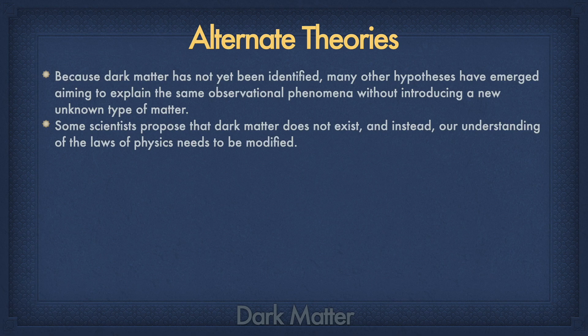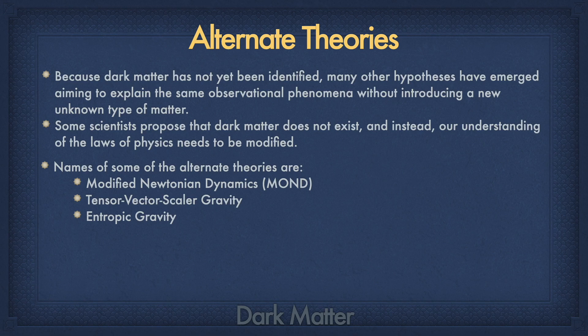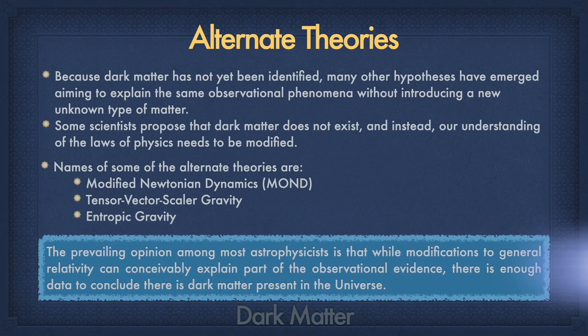Because dark matter has not been detected in lab conditions, many alternate theories have been proposed. All these theories explain the same cosmological phenomena without depending on dark matter. The alternate theory proponents argue that we should modify our understanding of the laws of gravity. Some leading alternate theories are Modified Newtonian Dynamics (MOND), Tensor-Vector-Scalar gravity, and Entropic gravity. In spite of these proposals, most astrophysicists do not agree with them.